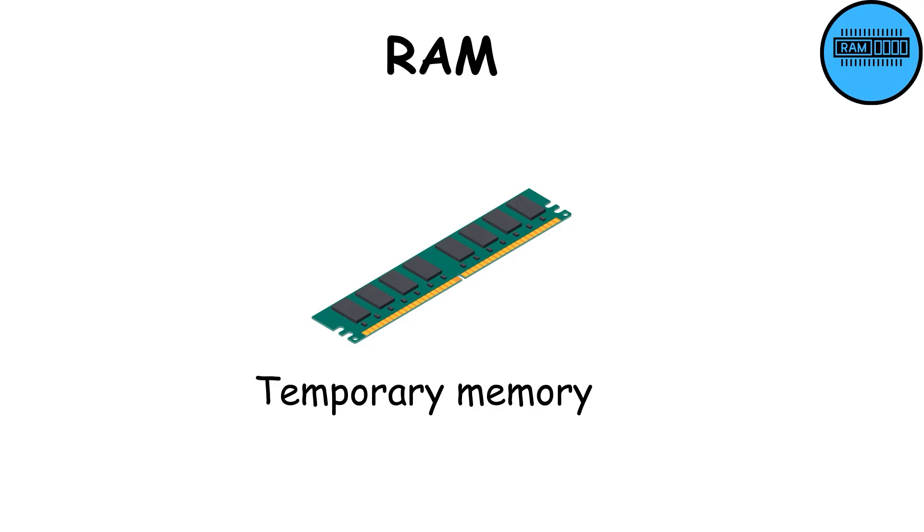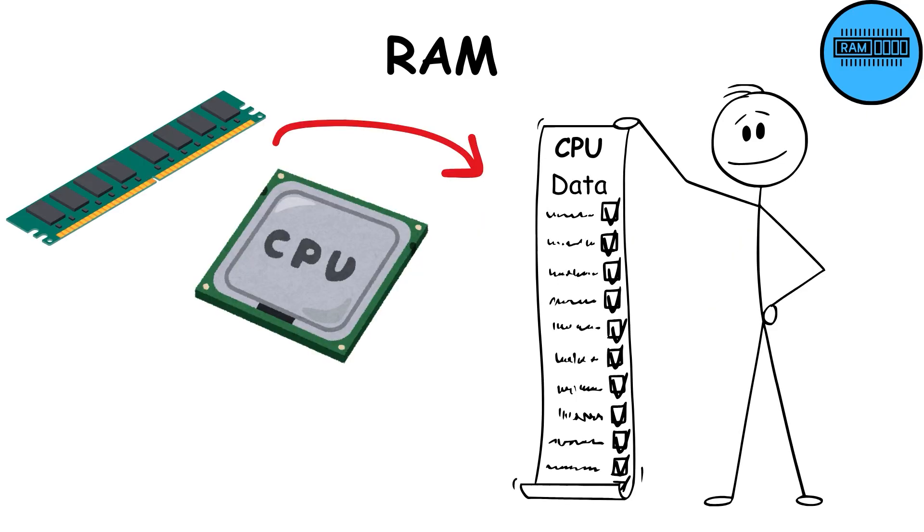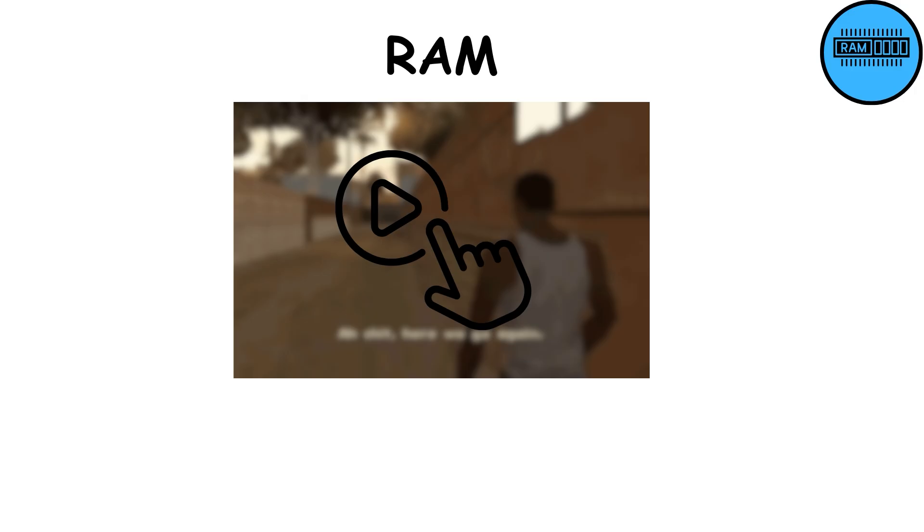RAM. RAM is a temporary memory that's much faster than a hard drive. The data most needed by the CPU is kept here. For instance, when you open a game, it loads into RAM, allowing smooth gameplay.